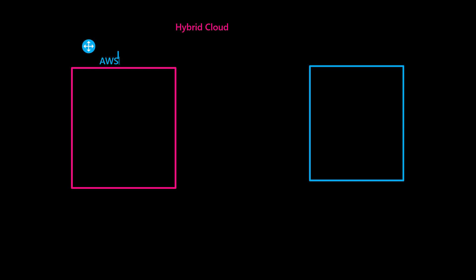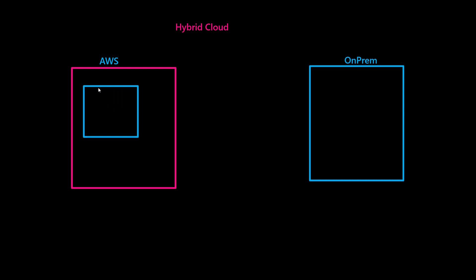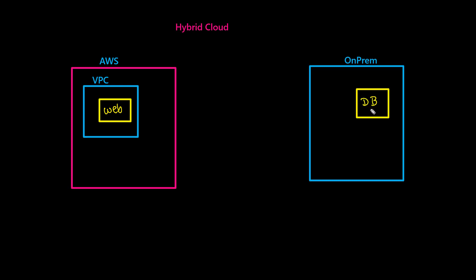This is your AWS environment and this one is your on-prem environment. In the AWS environment, you would have VPCs and in that VPC, you would have your servers running. A hybrid solution may look like we have a web server in the cloud and then we have the database still running on-premises. That is a hybrid distributed architecture.